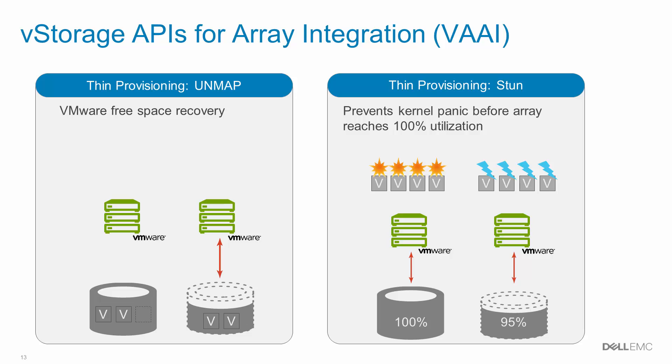The fourth block primitive is designed for thin provisioning and is made up of two components: Unmap and Stun. When virtual machines are deleted or moved from one datastore to another, or when data is deleted within a virtual machine with a supporting guest operating system, the blocks of storage they were using previously remain pinned by the vSphere host, although they are not currently in use.